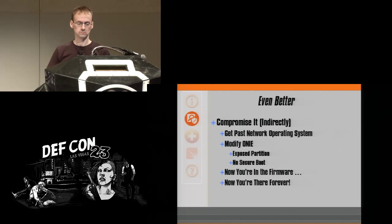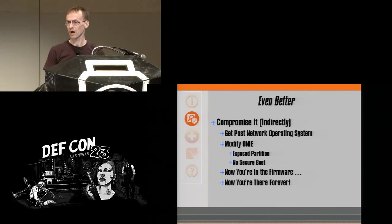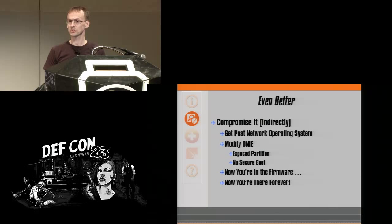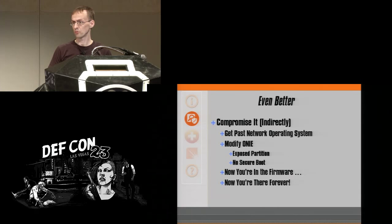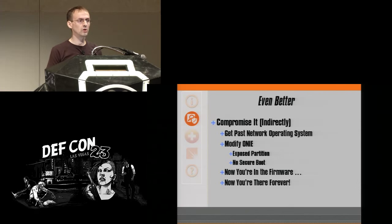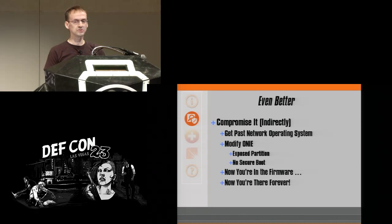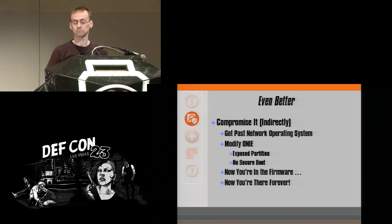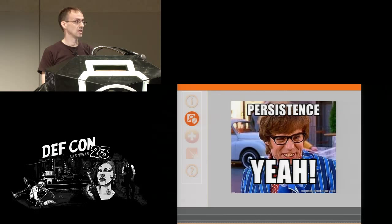So is there a better way? Compromise it indirectly. The network operating system is going to be up 99% of the time — see what you have to work with. Get past the network operating system, modify ONIE. It's an exposed partition, just sitting there — take advantage of that, compromise ONIE. There's no secure boot to stop you. So over and over again, this will regain your persistence — ONIE will keep doing whatever you tell it to do. If you compromise the network operating system and are able to compromise ONIE, then any time a new network operating system is installed, you're basically back again. You're in the firmware — essentially there forever. And that's what we're looking for as attackers, or as white hat penetration testers: persistence.